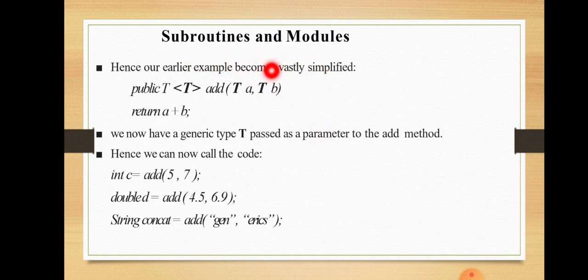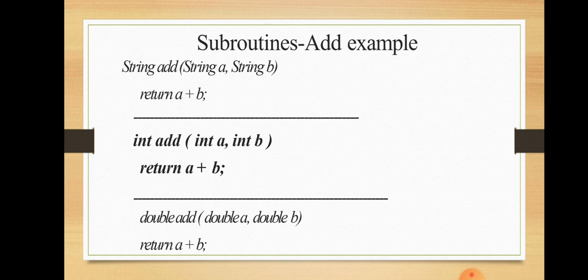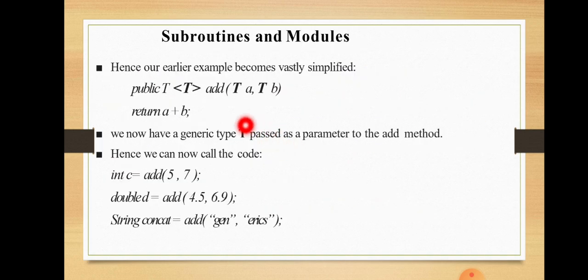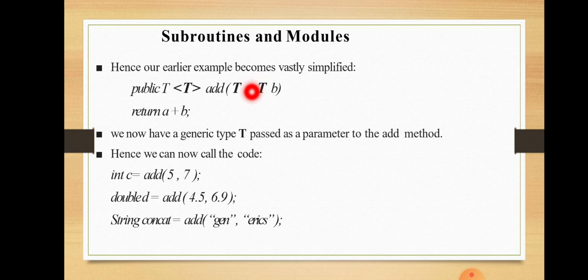Our earlier example becomes vastly simplified. Previously, we had separate subroutines: one accepting string arguments, one accepting integer arguments, and one accepting double arguments. Now we write only a single generic subroutine. Here, public T add(T A, T B) returns A plus B. Here T is a generic type, which means this subroutine can accept any type of data — it can be string, integer, double, float, or anything.